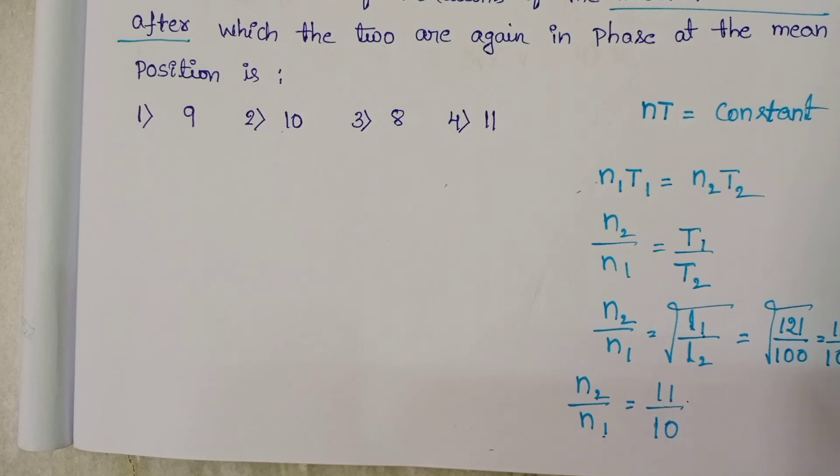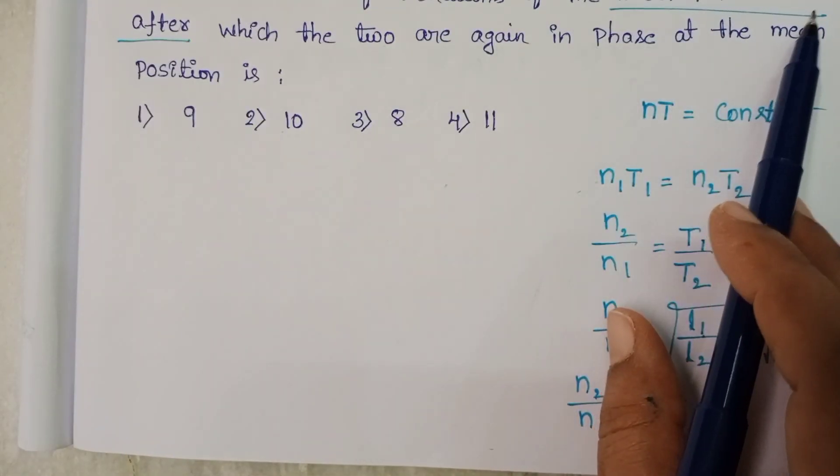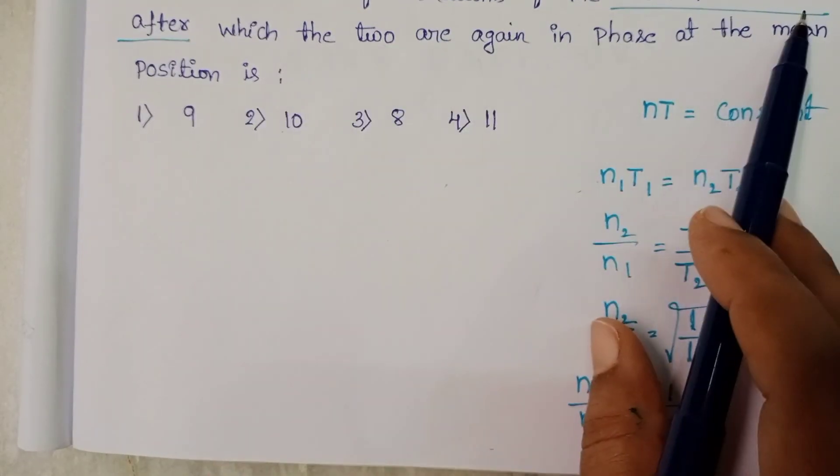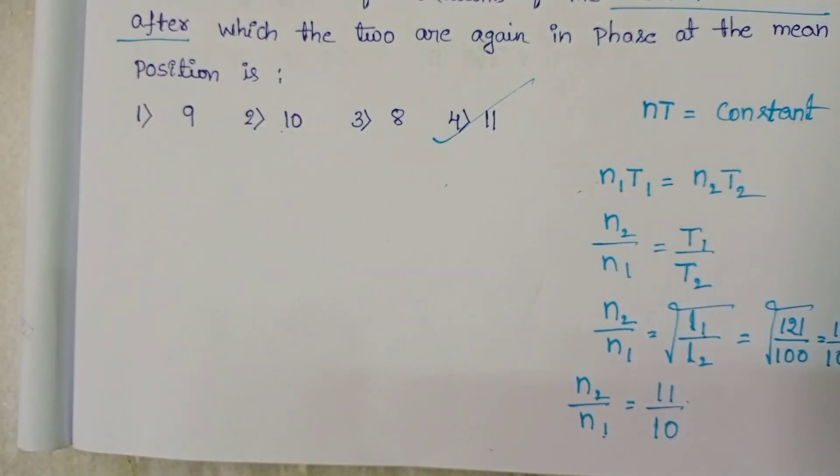So shorter pendulum has more vibrations when compared to the longer pendulum. The number of vibrations made by the shorter pendulum is 11. So correct option is 4th option.